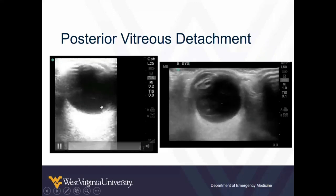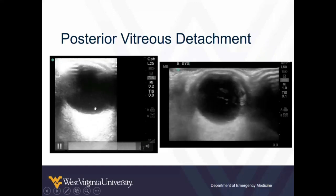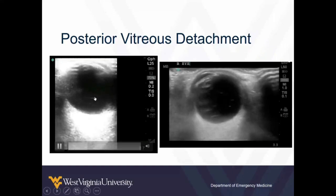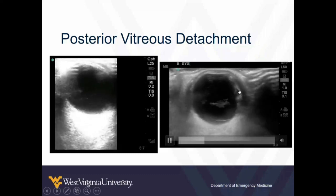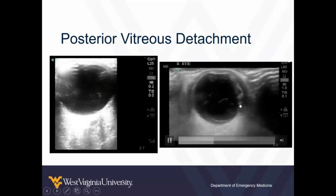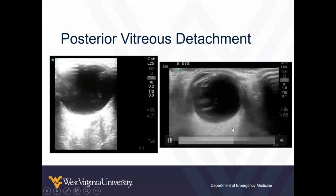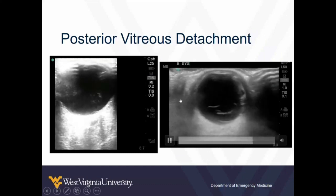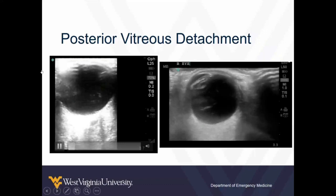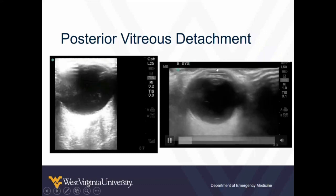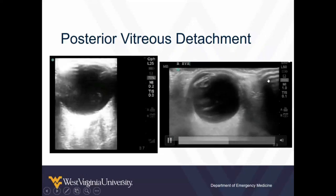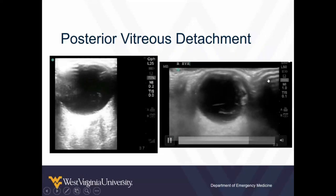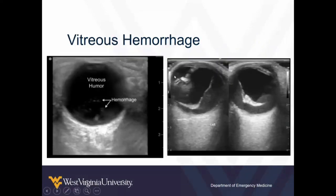Posterior vitreous detachment is not nearly as bright, thick, or heavy as retinal detachment. It doesn't look like a single sheet — you kind of see little branches and little fuzzy things going off in different directions. And it doesn't tether itself to the nerve. If you're paying close attention, you see how bright everything is around it. A lot of times to see these well, you have to really crank up the gain, which you shouldn't have to do with retinal detachment because the retina is very bright.